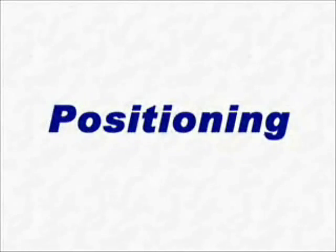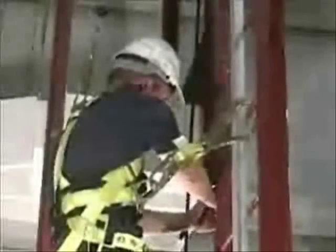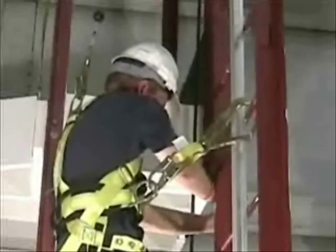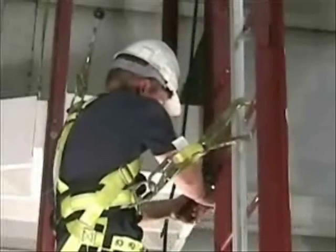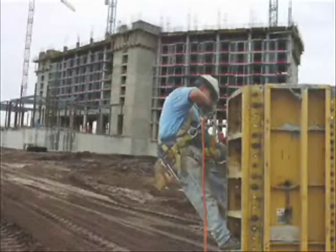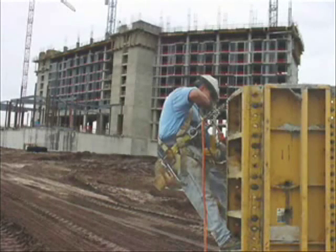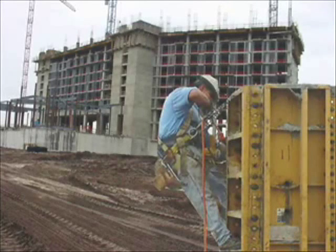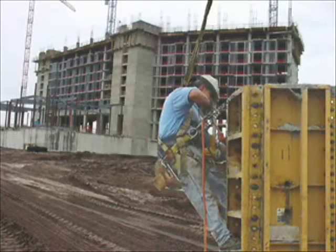The second category is the personal positioning system. A positioning system holds the worker in place while allowing a hands-free work environment. Activities such as tower work or rebar form construction use positioning systems. A common type includes a full body harness with side positioning D-rings, a positioning device such as a rebar chain assembly, and an attachment point capable of supporting a 5,000-pound load. Repositioning of the system may expose the worker to a fall hazard, requiring a personal fall arrest system to be used in conjunction with the positioning system to provide 100% protection.